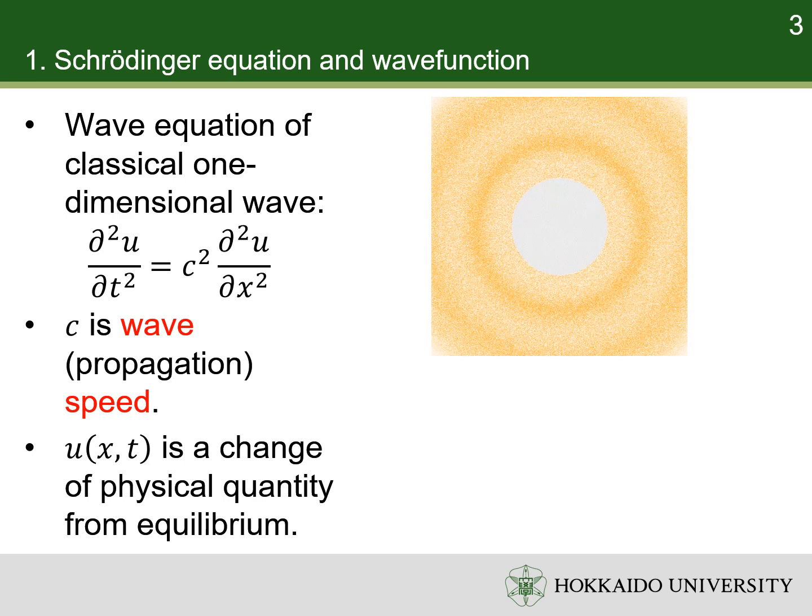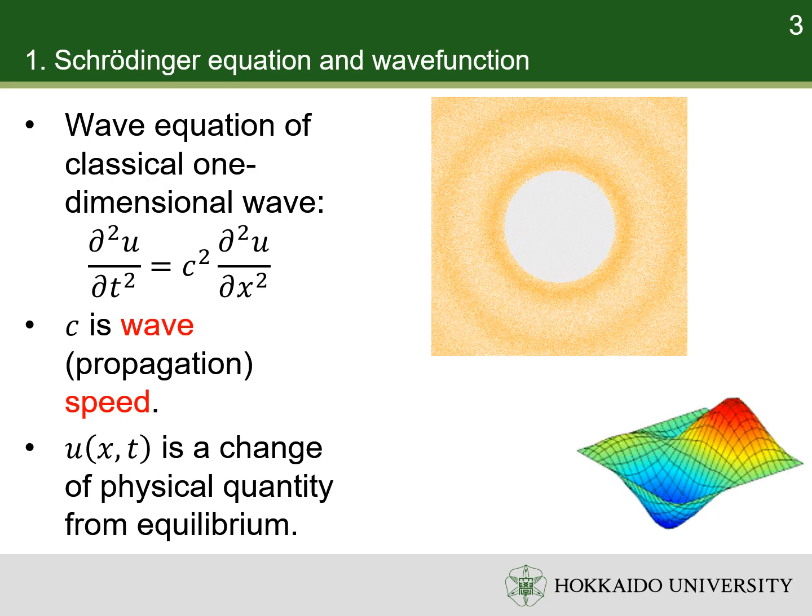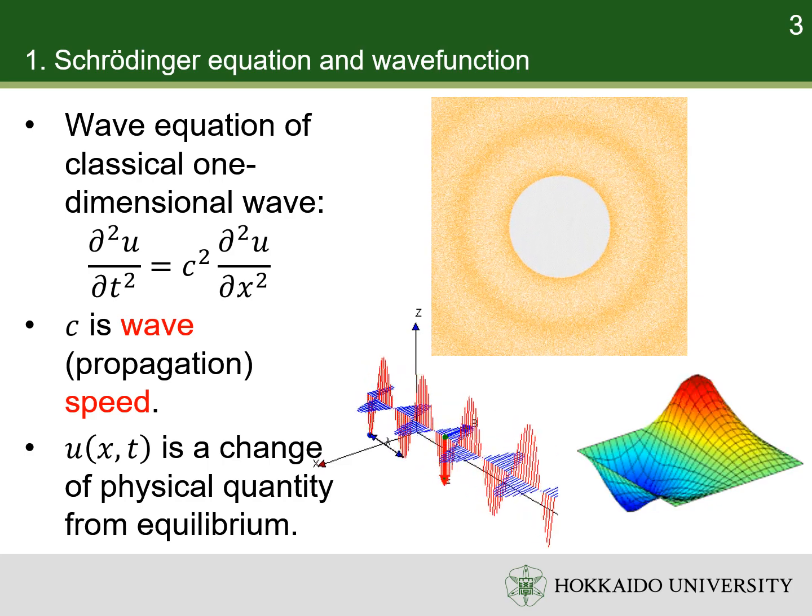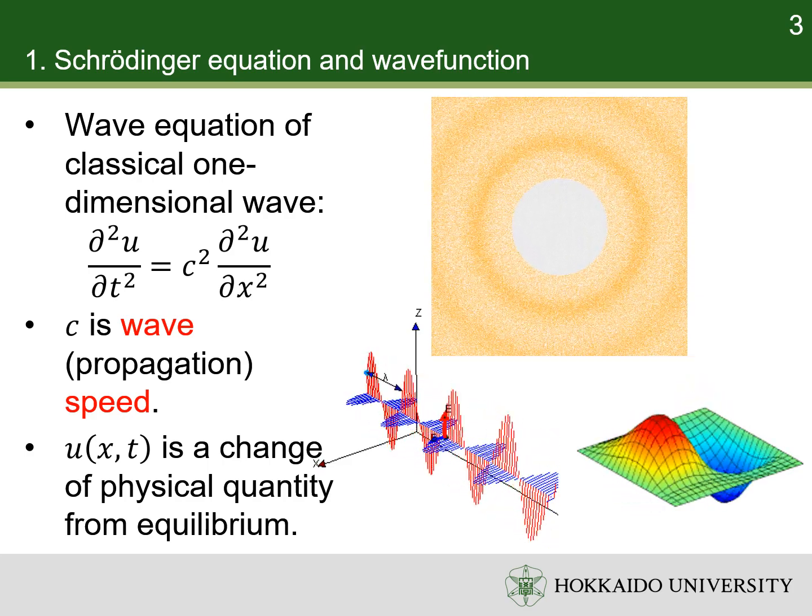It could be gas pressure above or below normal in sound wave, the height of water in a pond above or below rest in water wave, or the electric field strength or magnetic flux density in electromagnetic wave.